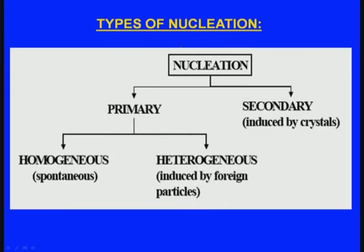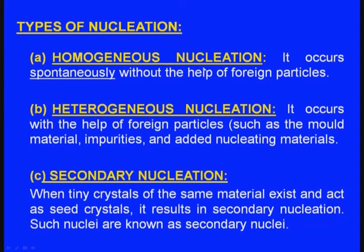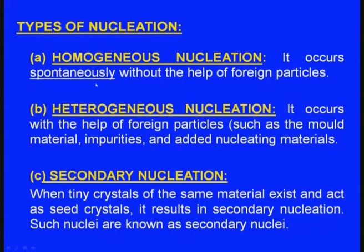There are primarily two types of nucleation: primary nucleation and secondary nucleation. Under primary nucleation, there are two types: homogeneous and heterogeneous. Homogeneous nucleation occurs spontaneously without the help of foreign particles or impurities. Heterogeneous nucleation occurs with the help of foreign particles or impurities, and generally this occurs in a casting at the beginning of solidification, especially nearer to the mould wall where impurities are present.